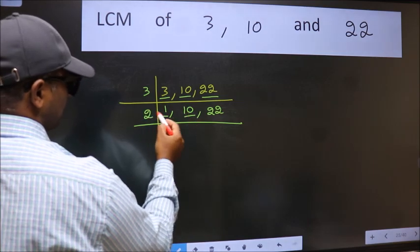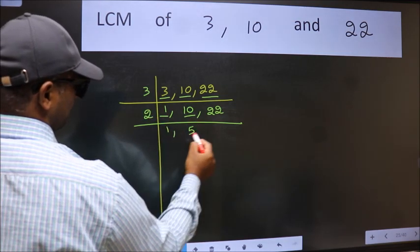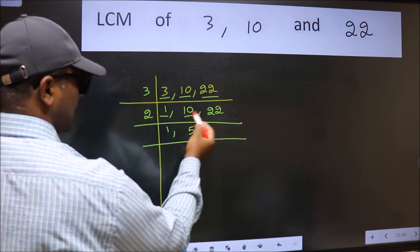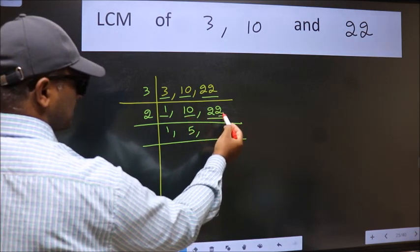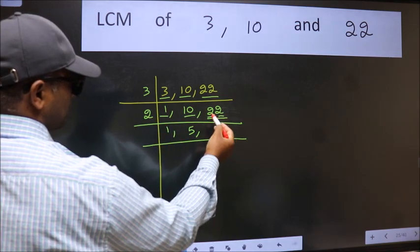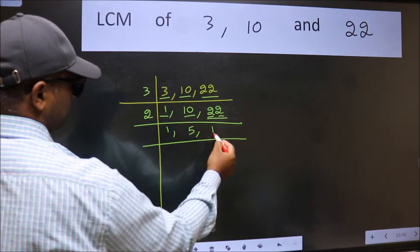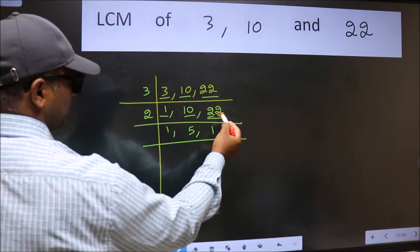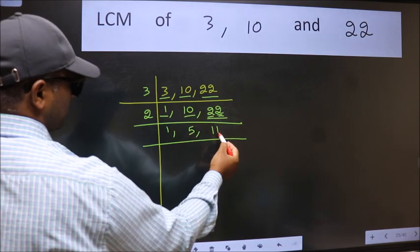10 is 2 times 5. The other number, 22, last digit is 2, even, so this number is divisible by 2. First number, when do we get 2 in the 2 table? 2 once is 2. The other number, when do we get 2 in the 2 table? 2 once is 2.